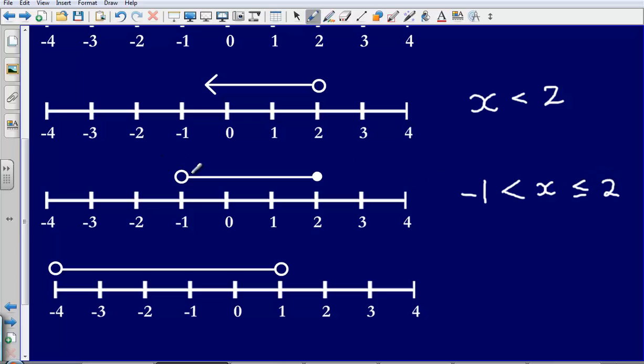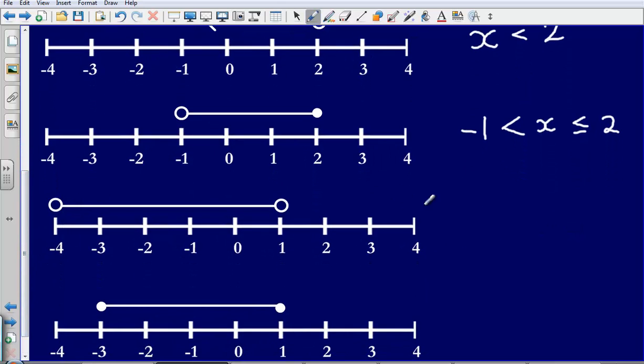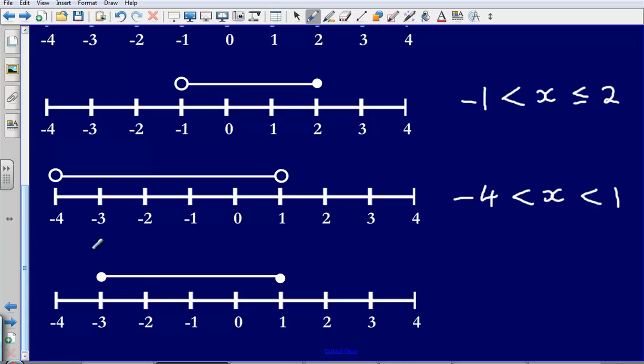So, again, we have got a hollow point here, so it is not equal to, we have got our coloured in point, so it could be equal to. Next one, we have got minus 4 and we have got 1, we have got x in between those and we can say that x is greater than negative 4 but less than 1. Again, they are not coloured in, so we use the greater and less than signs as opposed to greater than or equal to.